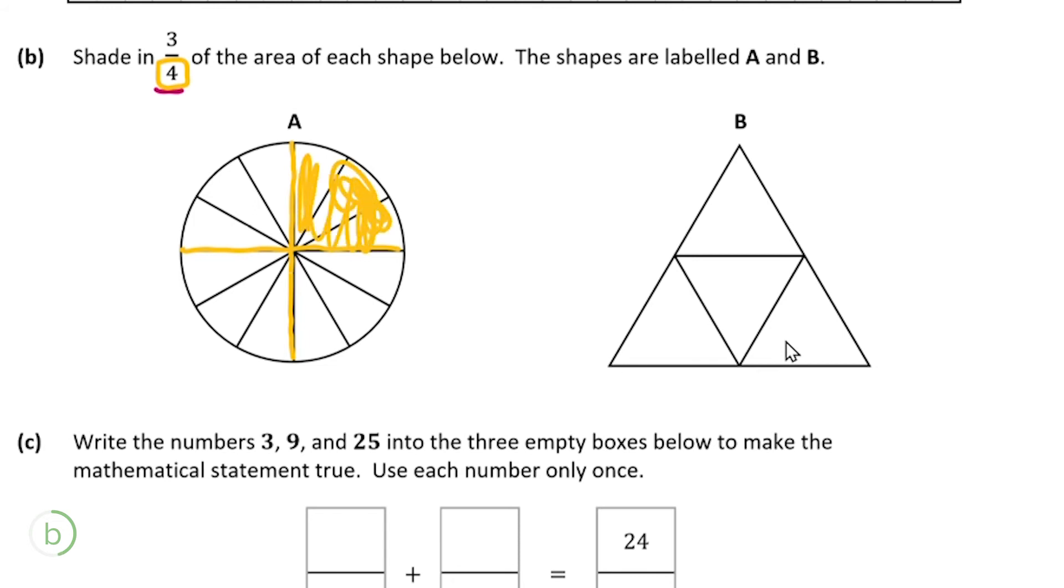And now I want to shade in three quarters of the shape, so I have to shade in three of these segments. So I can simply do that by shading in this first segment, shading in this second segment, and finally shading in this third segment. So I'd recommend on your actual exam date do it a tiny bit neater, but as long as it's pretty obvious what you're shading in you'll get the full marks.